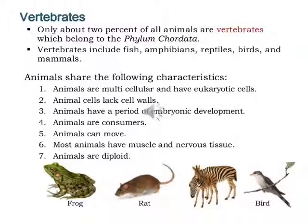Now we will discuss vertebrates. Only about two percent of animals are vertebrates, belonging to Phylum Chordata. Vertebrates include fish, amphibians, reptiles, birds, and mammals — including humans. Their characteristics, as discussed earlier: animals are multicellular with eukaryotic cells, they don't have a cell wall, and they go through a phase of embryo development.